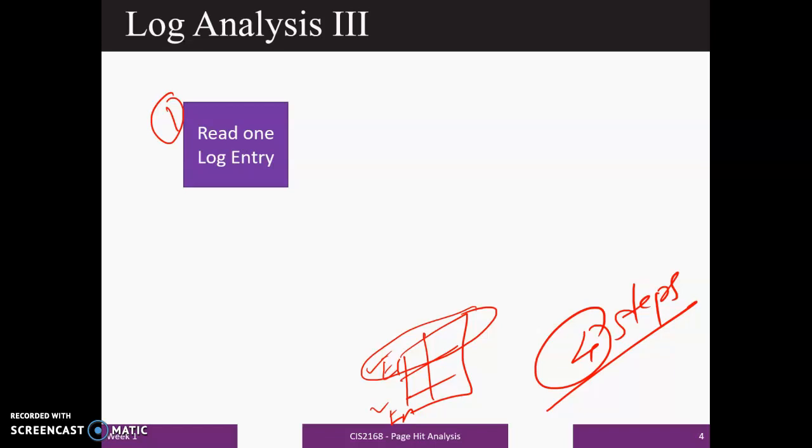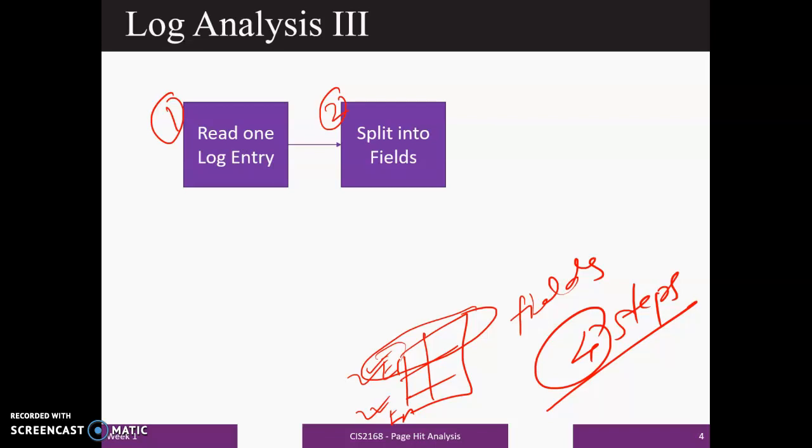Step number 2 is on splitting fields, splitting the entries into fields. We will split this individual entry into fields. In the next step, we will save relevant field values. So this is step number 3. These three blocks, step number 1, 2 and 3, as of now, it is for one entry. That is, we can say for e1, one entry.